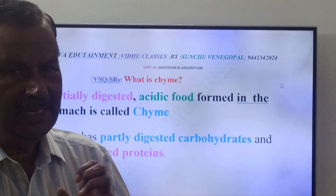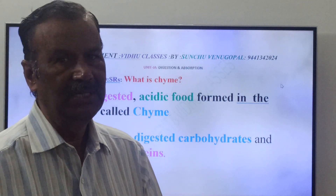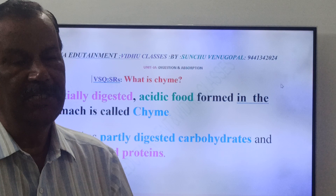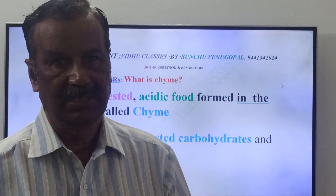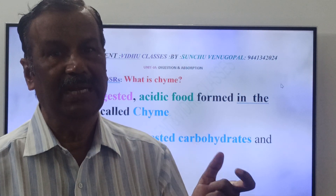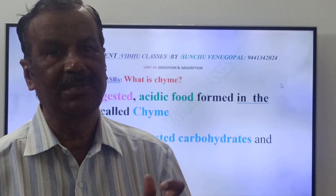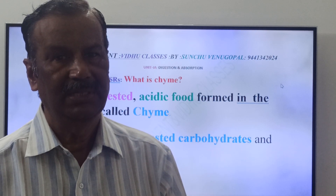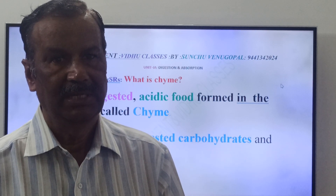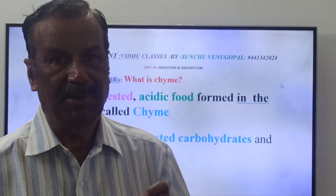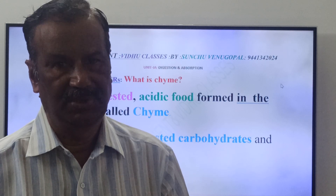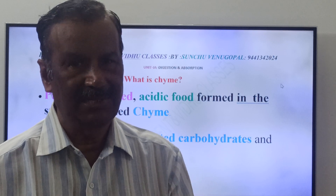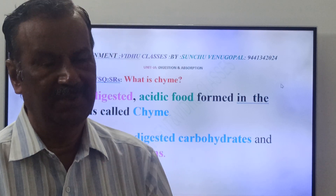Because of this, churning movements take place in the stomach. So, here in the stomach, the bolus or the food bolus is partly digested and mixed with HCl through the churning movements of the stomach walls, and it forms a partially digested acidic food. That partially digested acidic food is called Chyme.